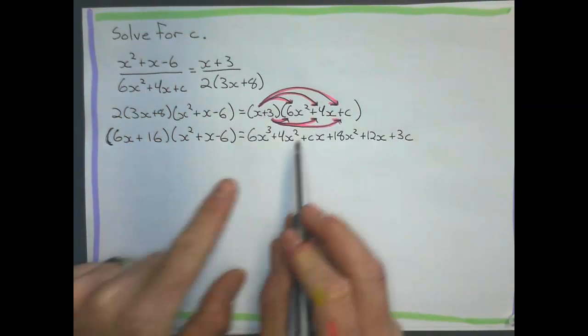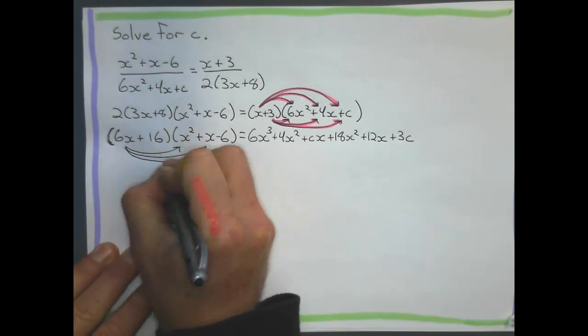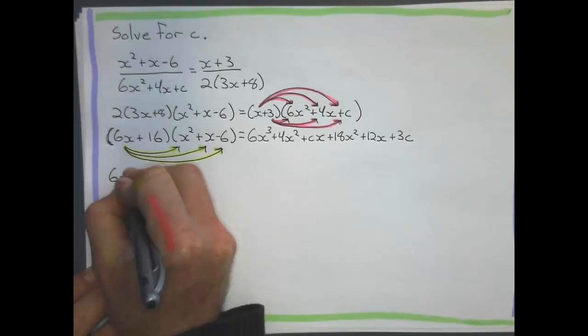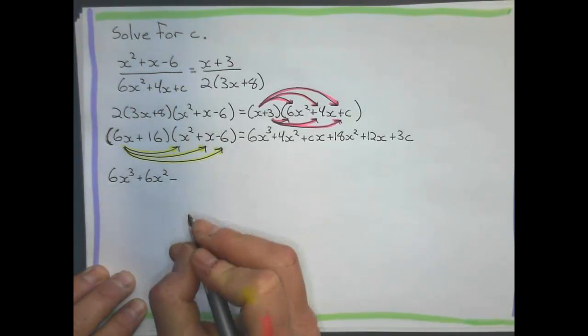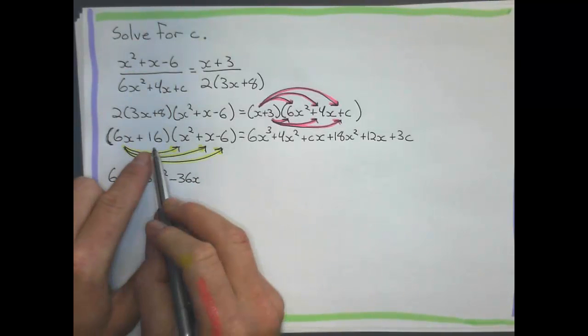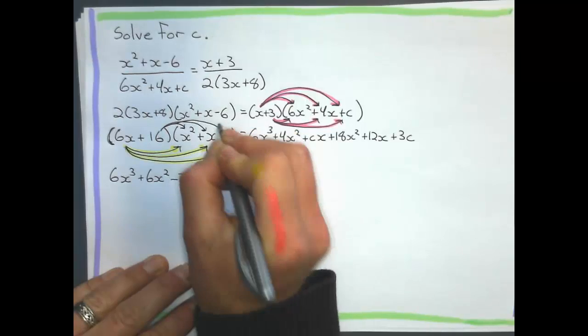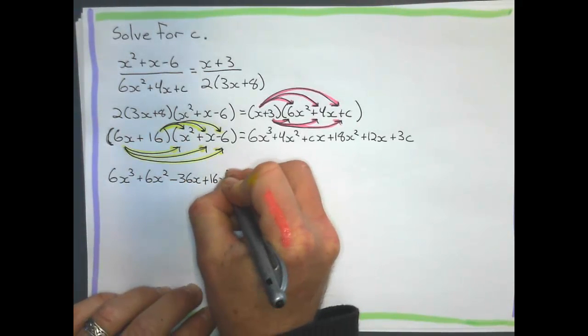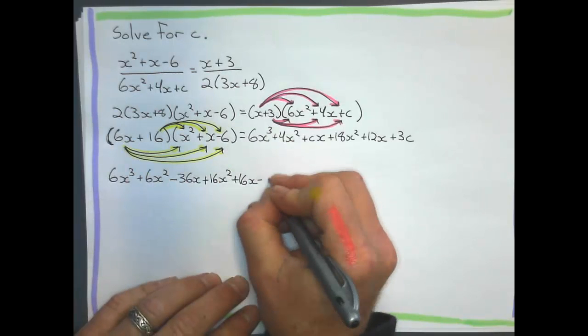Now I'm going to multiply this 3 all the way through. So I'm going to expand that through there. Put those little arrows there to remember to multiply. And what I get, 3 times 6x squared is positive 18x squared. 3 times 4x is positive 12x. And 3 times C is just plus 3C. So that same process I just did, I'm going to do it right here. I'm going to take the 6x and multiply it to every term in there. All three of those. And let's see what I get. 6x times x squared is 6x cubed. 6x times positive x is positive 6x squared. And 6x times negative 6 is minus 36x.